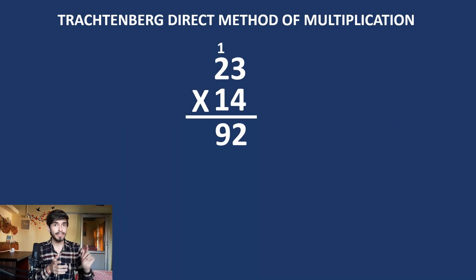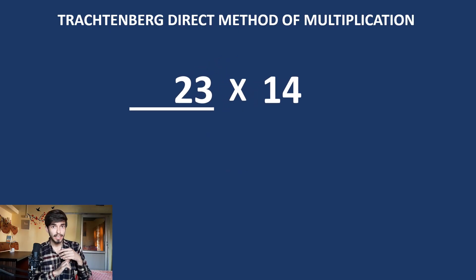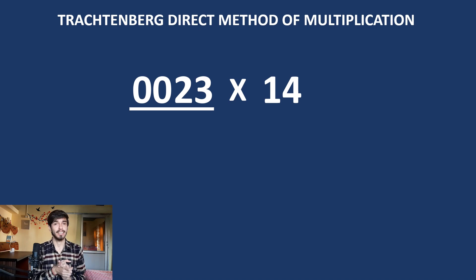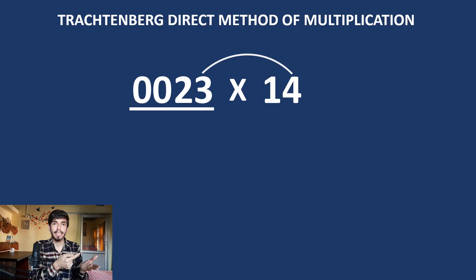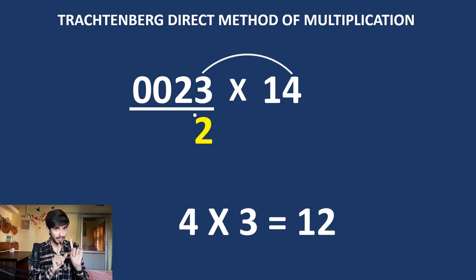Let's look at a simple example. Traditionally, if you multiply these two numbers it will look something like this. Now let's learn how to do this using the direct method. First, write the numbers like this — we are multiplying 23 by 14. Since 14 has two digits, put two zeros in front of 23. Step one: multiply 3 by 4. Make this arch mentally — four times three is 12, so write 2 and a dot for the carry.